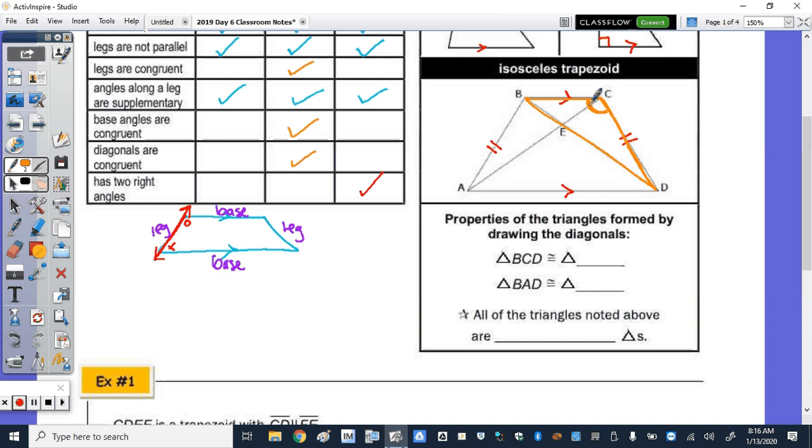is congruent to, because the base angles are congruent, angle B. They overlap here at BC, and then they have the legs congruent. So triangle BCD is congruent to triangle CBA. Triangle BCD, so let's highlight that in blue. So BAD, so remember angle A is congruent to D.